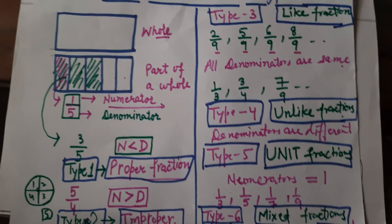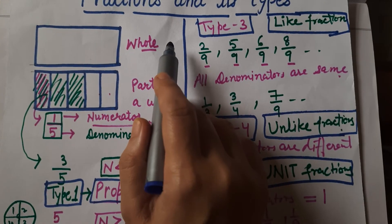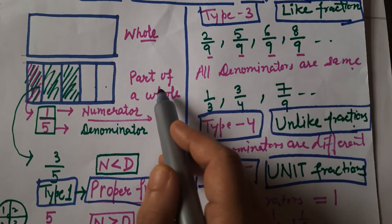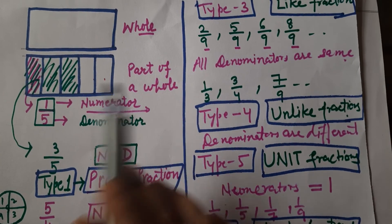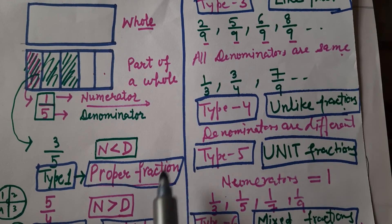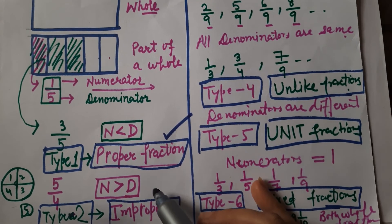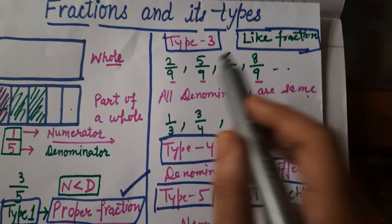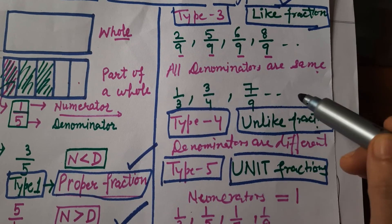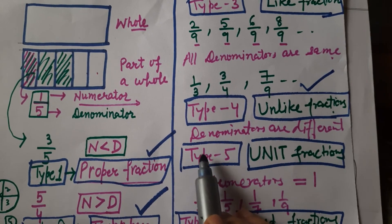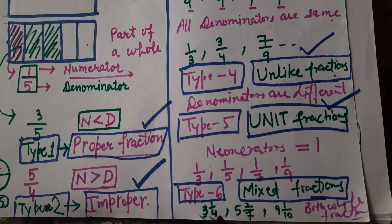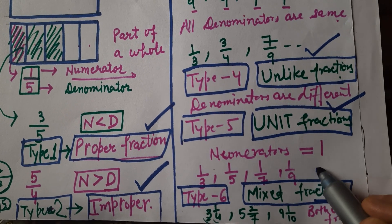Let me recapitulate. A fraction is a part of a whole. The upside number is the numerator and the downside number is the denominator. If the numerator is less than the denominator, it is a proper fraction. If the numerator is greater than the denominator, it is an improper fraction. If denominators are the same, it is a like fraction. If the denominators are different, it is an unlike fraction. If the numerator equals one, it is a unit fraction. If we have both a whole number and a fraction part, it is a mixed fraction.